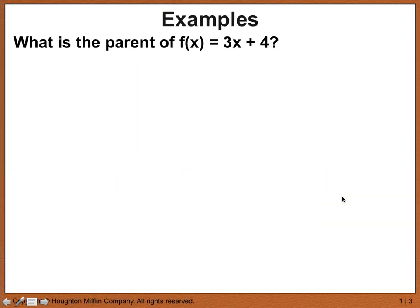Let's look at some examples. What is the parent of f of x equals 3x plus 4? So 3x plus 4 is our child function, and we're asked: what basic function does 3x plus 4 come from? The answer is the linear function — the basic linear function f of x equals x. Why? Because this is still in mx plus b form, just as f of x equals x is in mx plus b form. Here m is 3 and b is 4, whereas with the parent the m is 1 and b is 0. But it's still a linear function — it still makes a line.